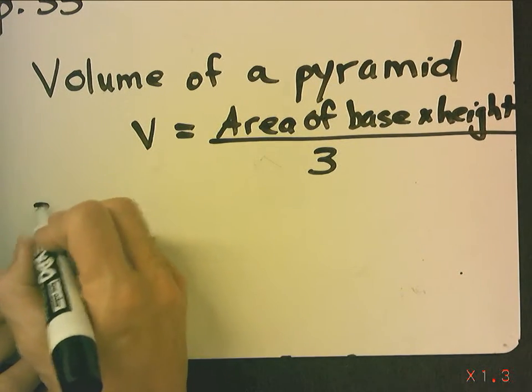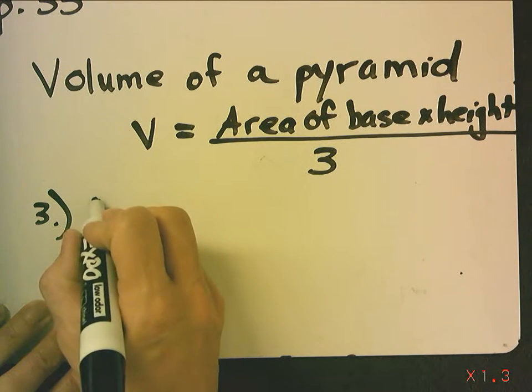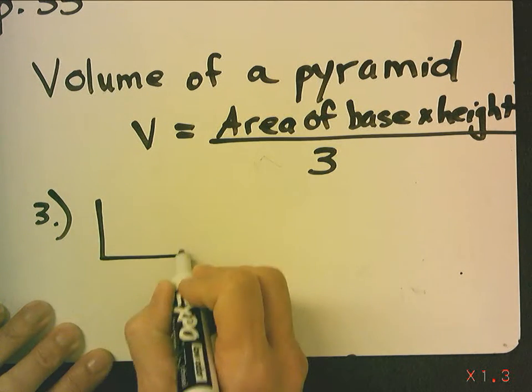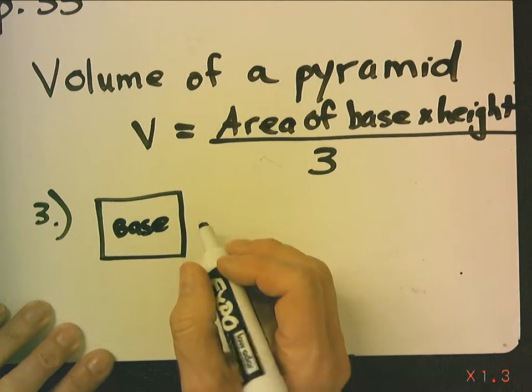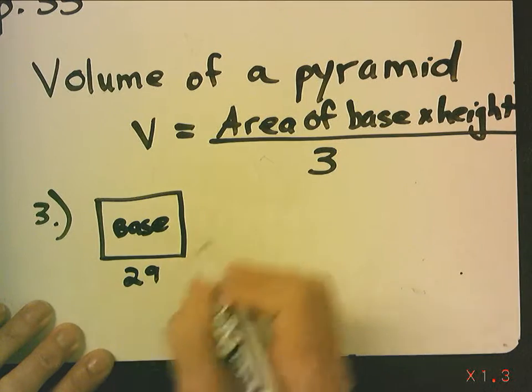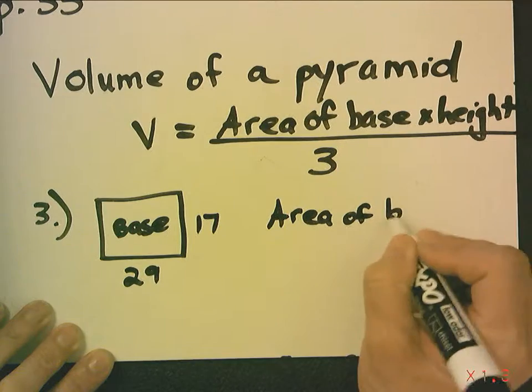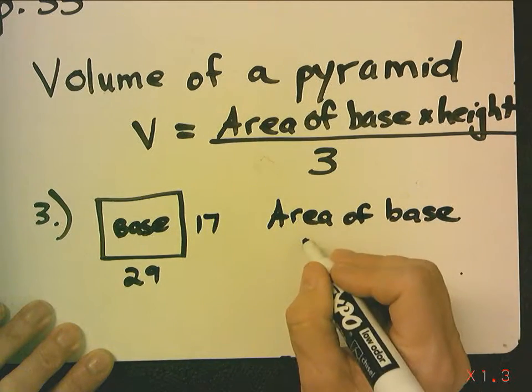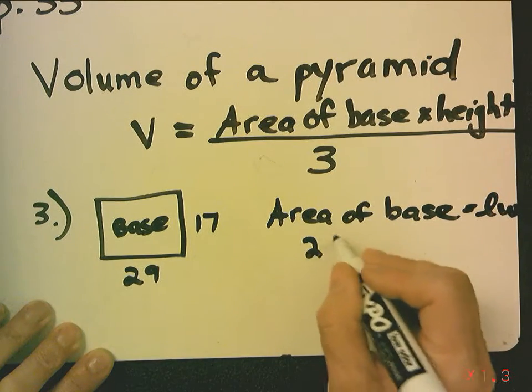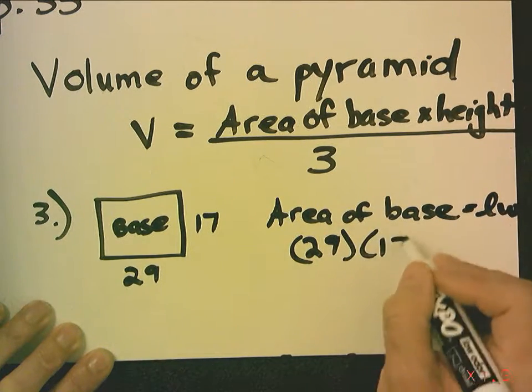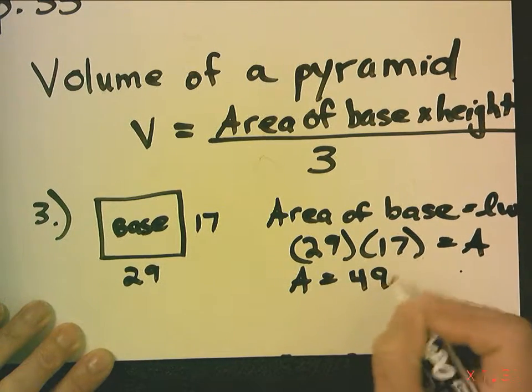So, I'm looking at number three. And number three has, first you have to figure out your base. In this case, my base is a rectangle. So, this is 29 by 17. So, the area of the base is length times width. In this case, it's 29 times 17 equals the area. And I get an area of 493.